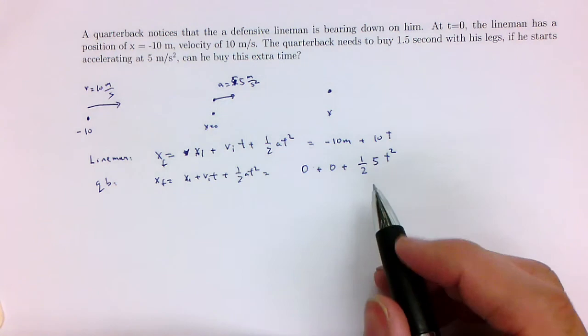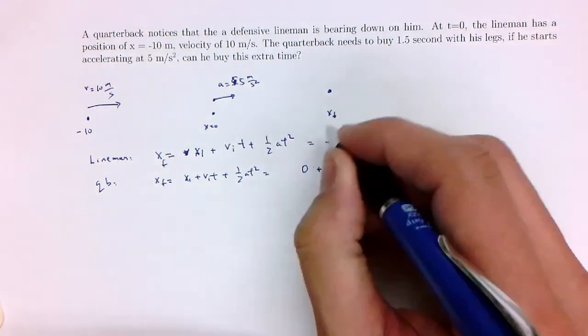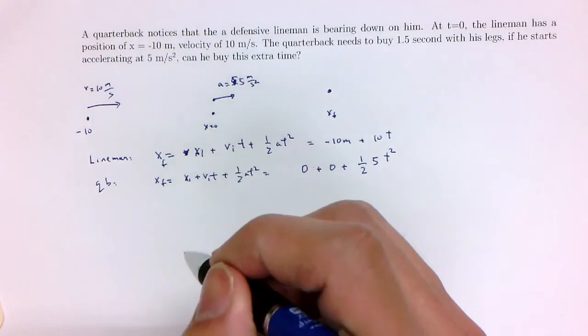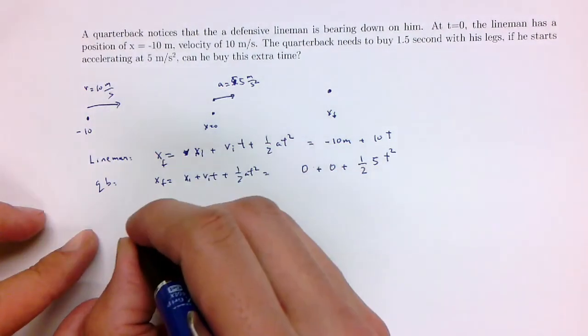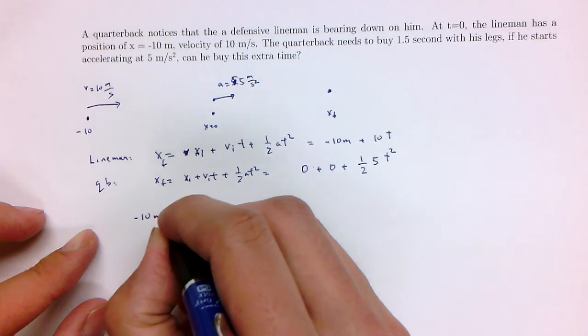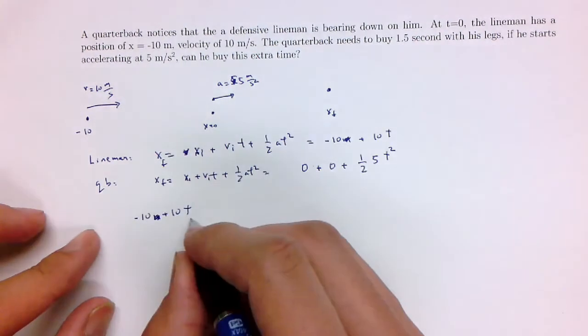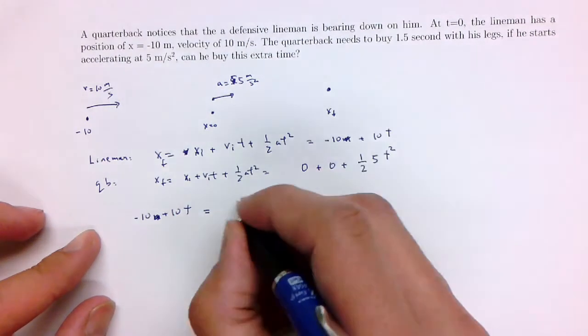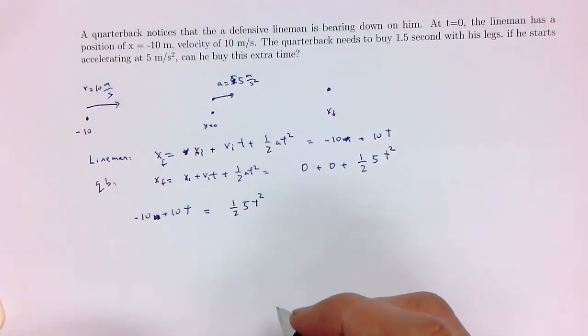We will assume that they will meet at this x final position. So we can set the lineman and the QB equal to each other. If we do that, this is where they meet. We have minus 10 plus 10t, let's take the meters out. That's the lineman, and that is equal to the position of the quarterback which is just going to be 2.5 times t squared.